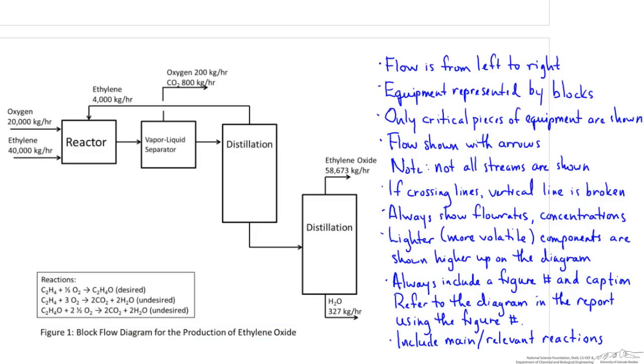To recap, remember that on a block flow diagram, flow is from left to right, equipment is represented by blocks and only main pieces of equipment are shown. If lines must cross, horizontal lines stay solid and vertical lines are broken. Make sure flow rates are shown, show more volatile components higher up on the diagram than heavier components, and include a figure number, caption, and list of reactions.